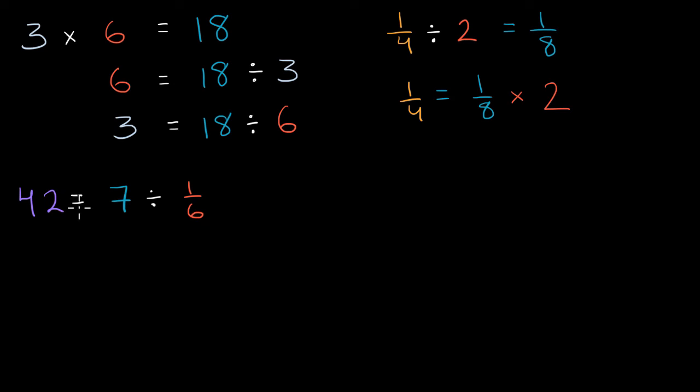Well, if 42 is equal to 7 divided by 1/6, that means that 42 times 1/6 is equal to 7. So let me write that down. This is the same relationship as saying that 42 times 1/6 is equal to 7.